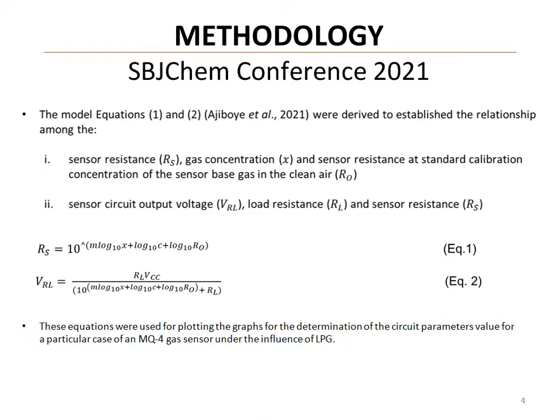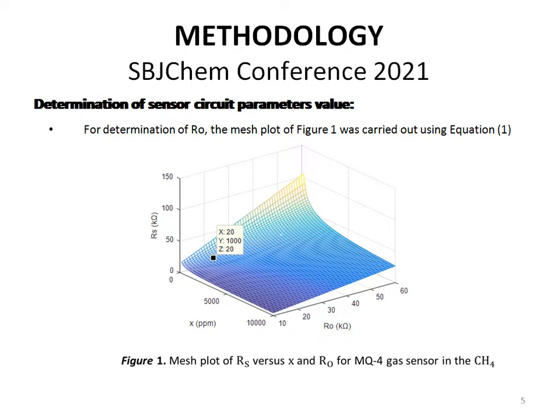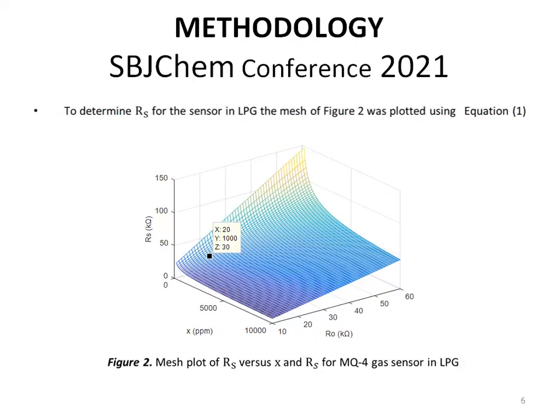First, the sensor resistance, gas concentration, and sensor resistance at standard calibration concentration of the sensor-based gas in clean air. Second, the sensor circuit output voltage, load resistance, and sensor resistance for a particular case of an MQ-4 gas sensor under the influence of LPG. To determine the value of R0, the mesh plot of Figure 1 was carried out using equation 1. To determine RS for the sensor in LPG, the mesh plot of Figure 2 was plotted using equation 1.